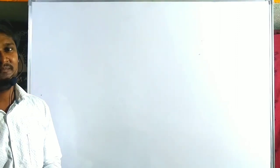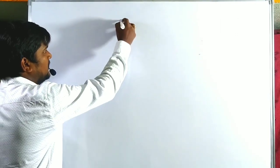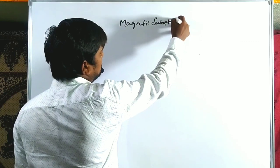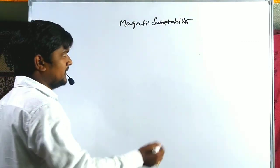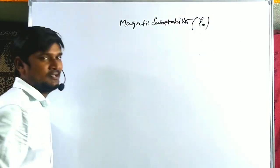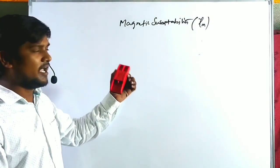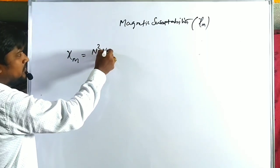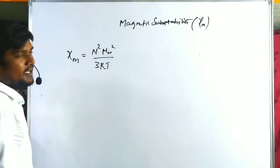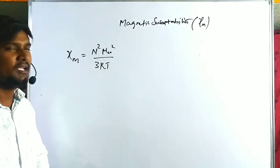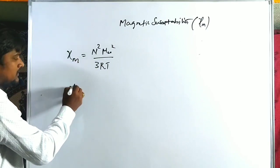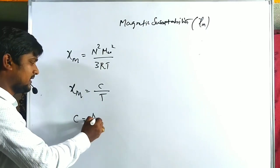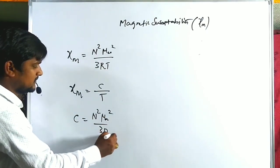Hi guys, welcome to the RPP Resonance Commission. Let us discuss the magnetic susceptibility of a complex compound. Generally magnetic susceptibility, shown by the symbol χ, is the molar susceptibility. With the help of classical theory, the magnetic susceptibility formula is N² times μ-effective² divided by 3RT. With the help of this formula, Curie introduced another form: χm is equal to C divided by T, where C equals N²μ-effective² divided by 3R. This is called Curie's constant.